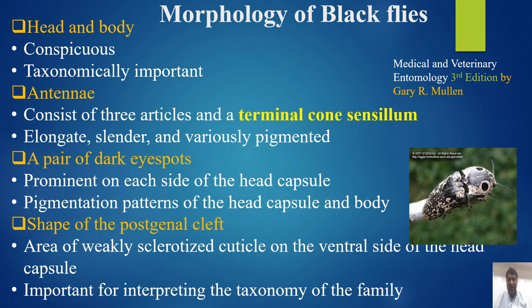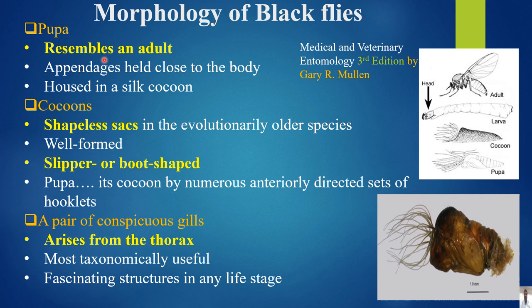Morphology — the pupa: pupae resemble the adult with appendages held close to the body. They are housed in silk cocoons — shapeless sacs in evolutionarily older species, and well-formed, slipper- or boot-shaped in others. The pupa is anchored by numerous anteriorly directed sets of hooklets, and bears a pair of conspicuous gills arising from the thorax. The gills are the most taxonomically useful and fascinating structure found in any life stage.